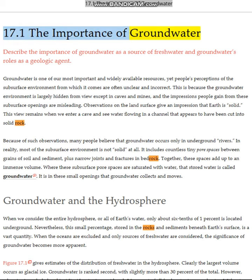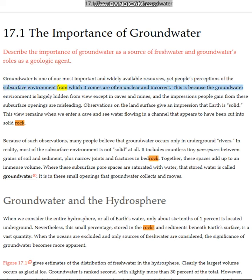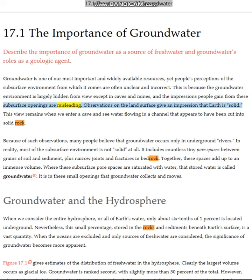17.1 The Importance of Groundwater. Groundwater is one of our most important and widely available resources, yet people's perceptions of the subsurface environment from which it comes are often unclear and incorrect. This is because the groundwater environment is largely hidden from view except in caves and mines, and the impressions people gain from these subsurface openings are misleading.